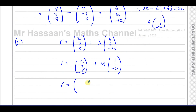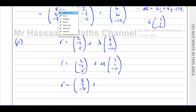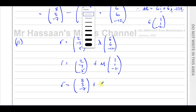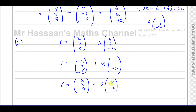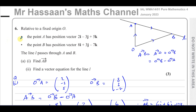For example, you could write r equals (8, 3, -7) plus S times (1, 1, -2), or even minus (1, 1, -2). There are plenty of valid forms, as long as the first part is a position vector of a point on the line and the second part is parallel to the direction of the line. That's the answer to question 6A.